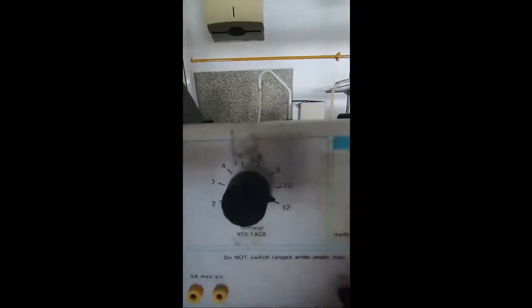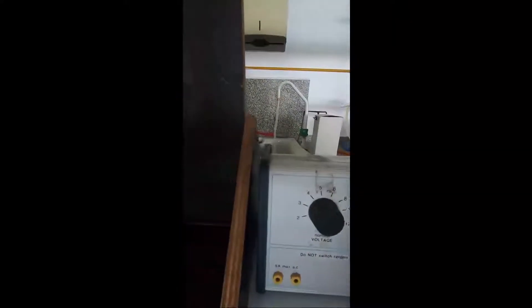We've already got it set to 12 volts, so if we flick the switch, let's have a look to see what happens. Straight away you might be able to see some bubbles of gas being produced at both of the electrodes. Both of them are producing gas.